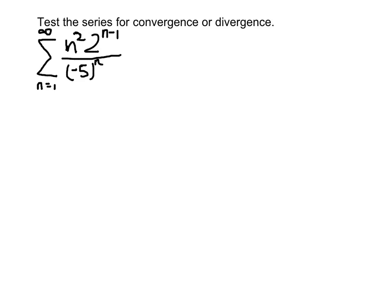We need to test a series for convergence or divergence, the summation n equals 1 to infinity, n squared, 2 to the n minus 1, all over negative 5 to the n.